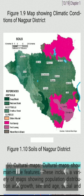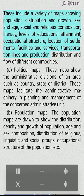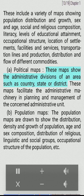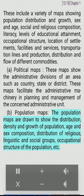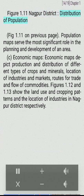Cultural maps show man-made features. These include a variety of maps showing population distribution and growth, sex and age, social and religious composition, literacy, levels of educational attainment, occupational structure, location of settlements, facilities and services, transportation lines and production, and distribution and flow of different commodities. A. Political maps show the administrative divisions of an area such as country, state or district. These maps facilitate administrative machinery and planning and management of the concerned administrative unit. Population maps are drawn to show the distribution, density and growth of population, age and sex composition, distribution of religious, linguistic and social groups, occupational structure of the population, etc. (Figure 1.11, Nagpur district distribution of population). Population maps serve the most significant role in the planning and development of an area.